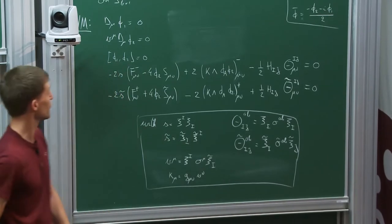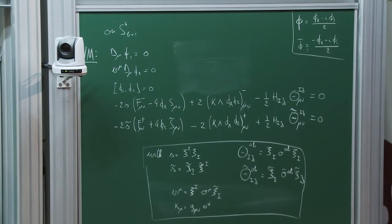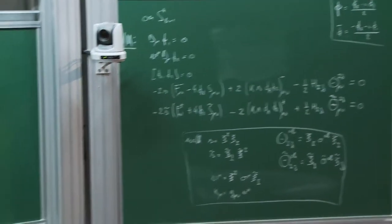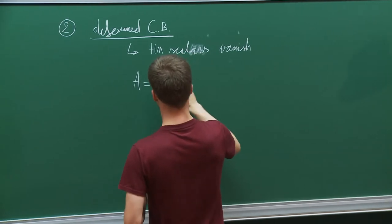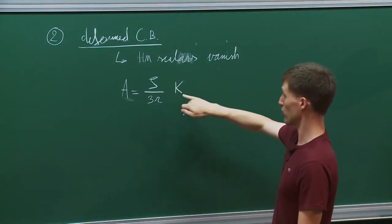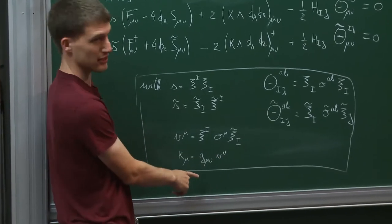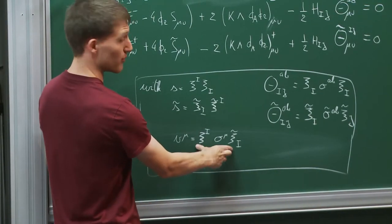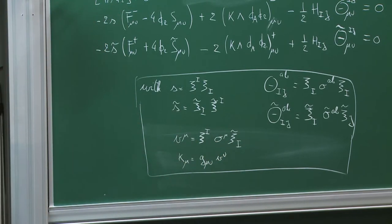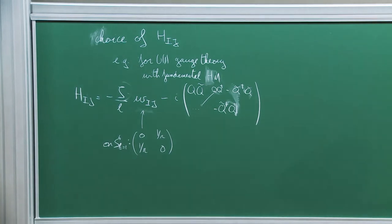When the hypermultiplet scalars vanish, the extra term from Q and Q-tilde is gone, but H_ij is still non-trivial — proportional to the fake FI times W_ij. So H_ij enters and we need to solve those four equations. The answer is that the gauge field A is proportional to kappa, where kappa is the one-form obtained by lowering indices on the Killing vector constructed from the Killing spinors, with proportionality factor precisely the fake FI parameter zeta.